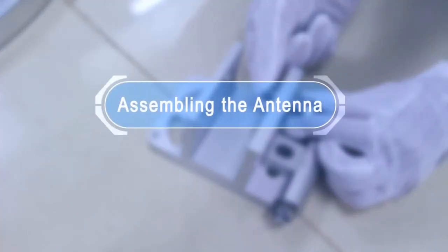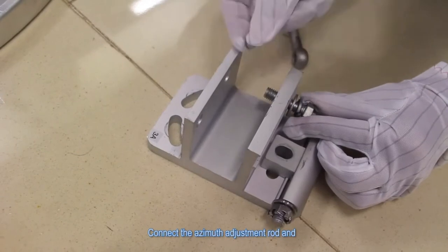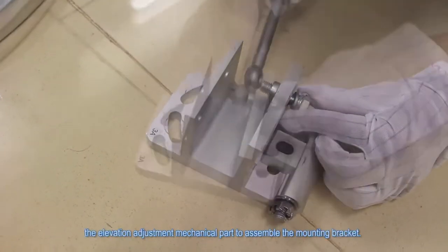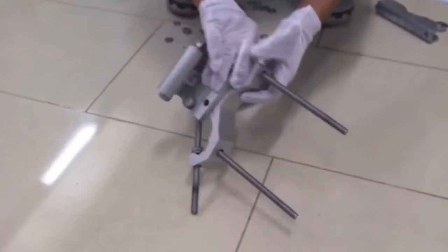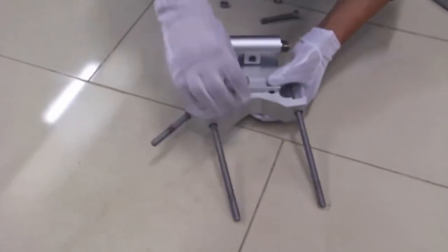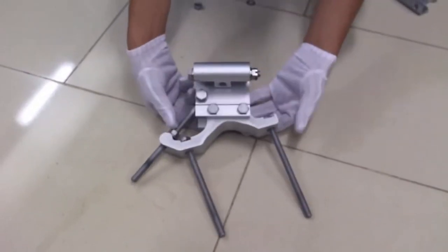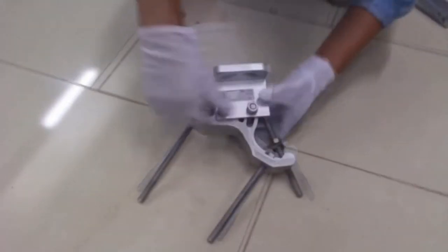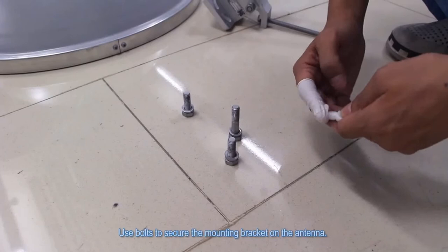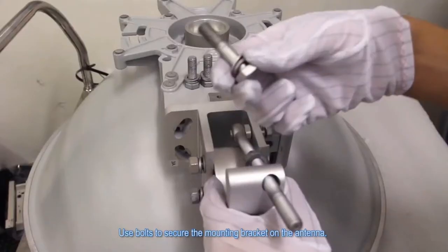Assembling the antenna. Connect the azimuth adjustment rod and the elevation adjustment mechanical part to assemble the mounting bracket. Use bolts to secure the mounting bracket on the antenna.